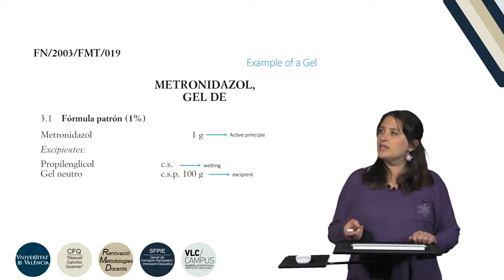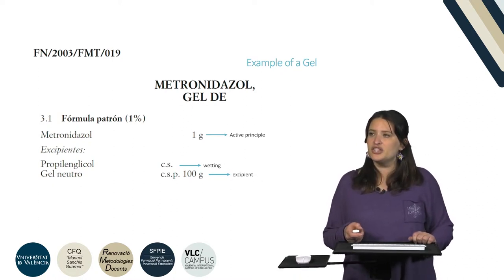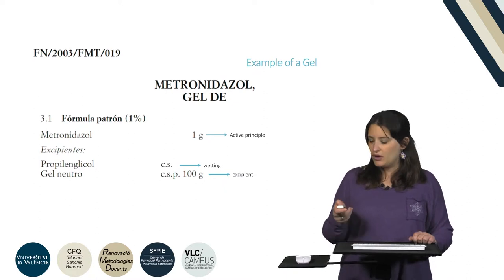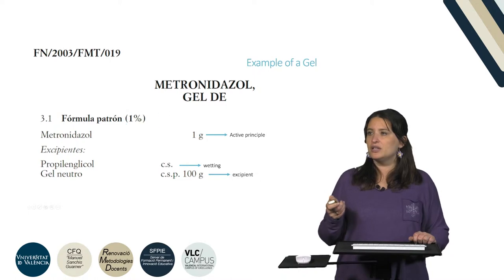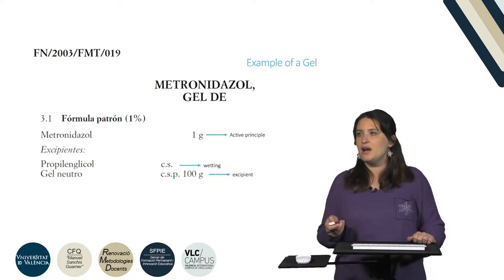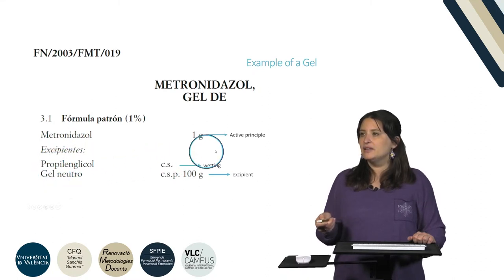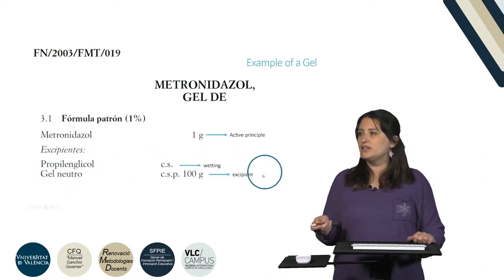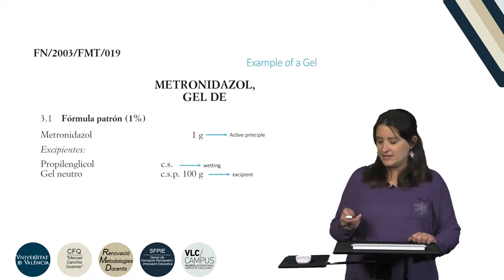In this slide we can see an example of a fat gel — in this case the metronidazole gel. It is prepared to contain 1% of metronidazole as the active pharmaceutical ingredient, and the excipients are propylene glycol and neutral gel. Propylene glycol is used as a wetting agent, and the neutral gel is the excipient base.